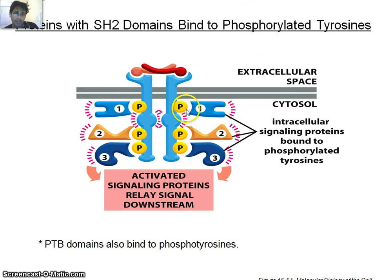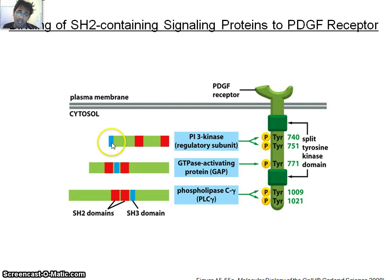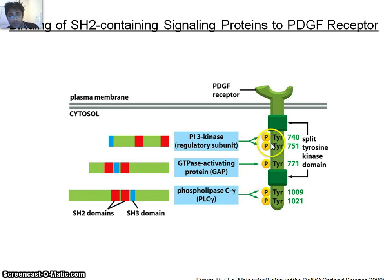The phosphorylated tyrosine residues serve as docking sites for other signaling molecules. Those signaling molecules can bind the phosphate group because they all have SH2 domains. For example, PI3 kinase, GTPase-activating protein, and phospholipase C all have SH2 and SH3 domains. The SH2 domain is responsible for binding the phosphorylated tyrosine group, and the SH3 domain mediates interaction with other types of proteins.